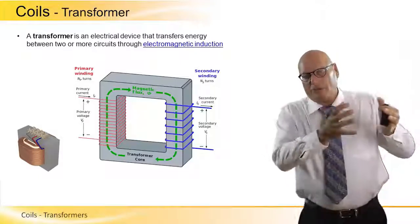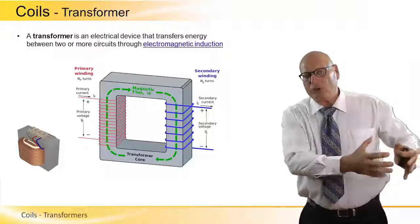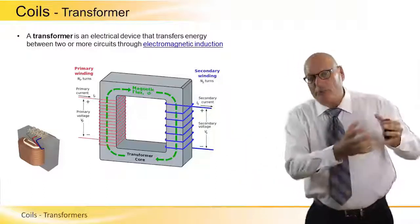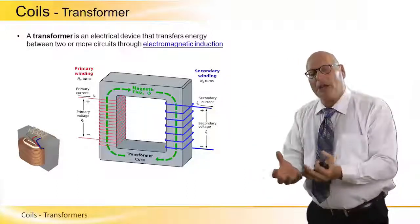So we have an input half, an output half, an input coil, an output coil, a primary coil, a secondary coil, inside a core.